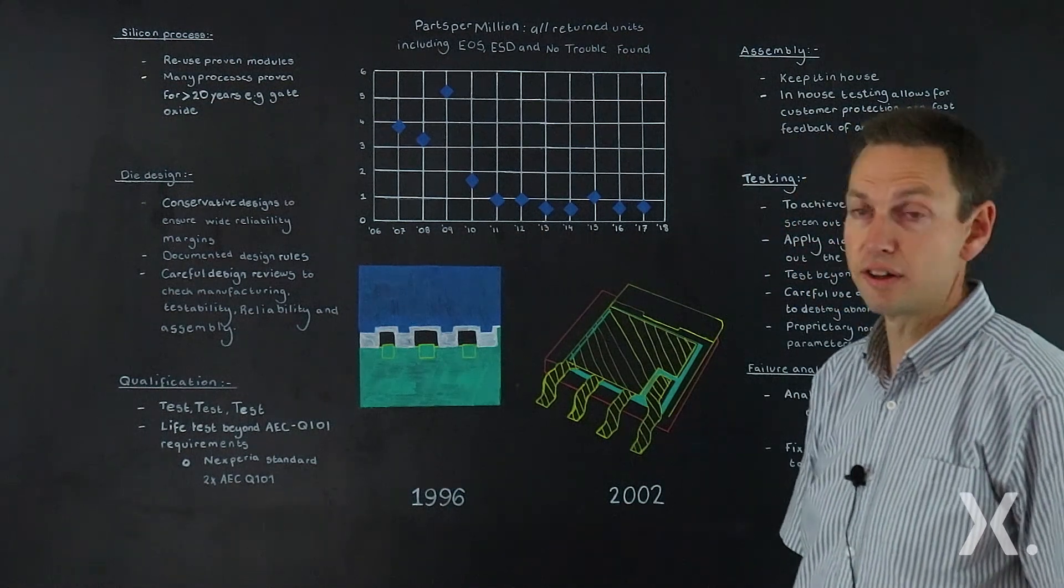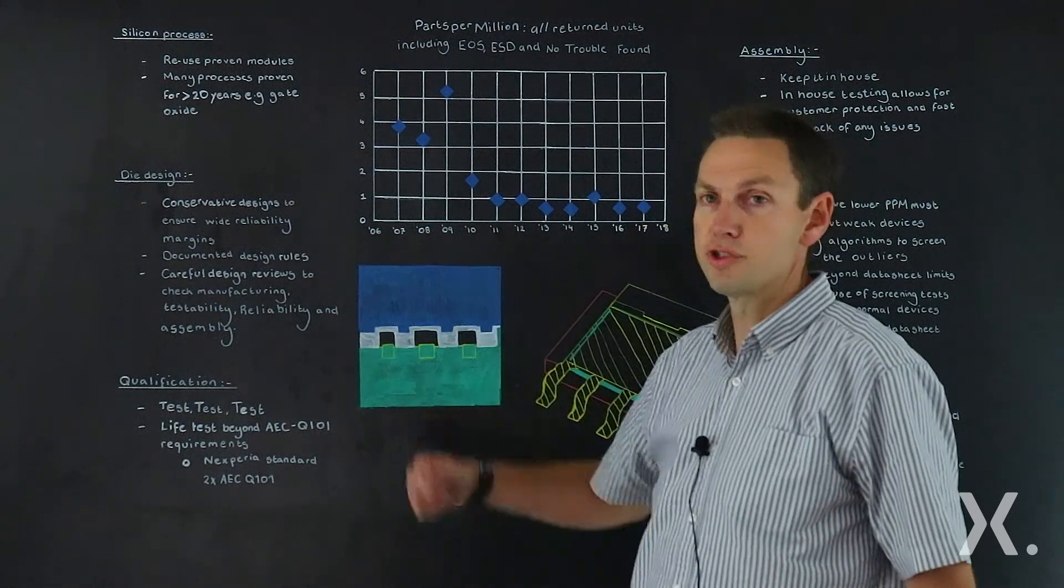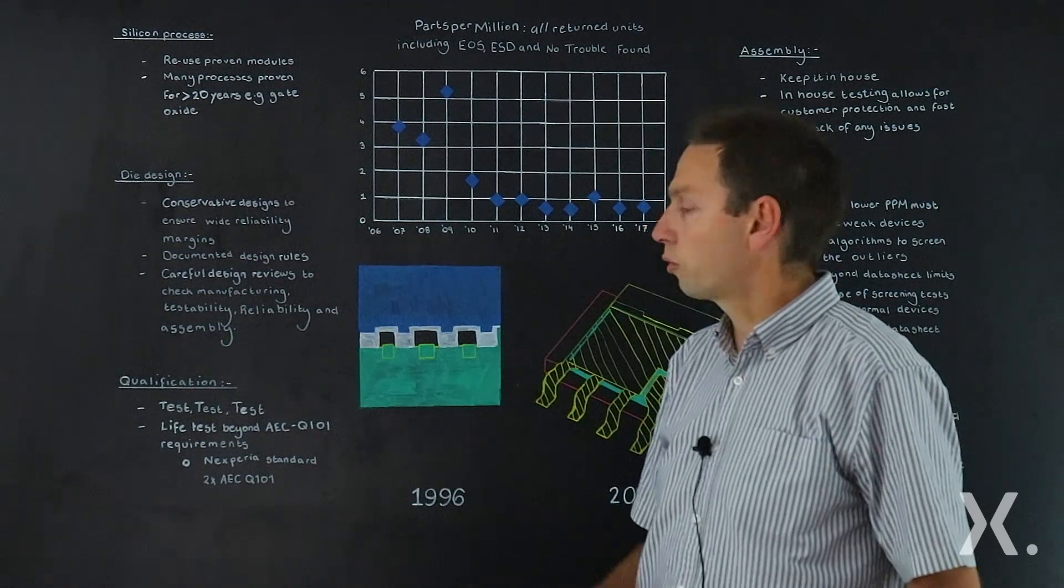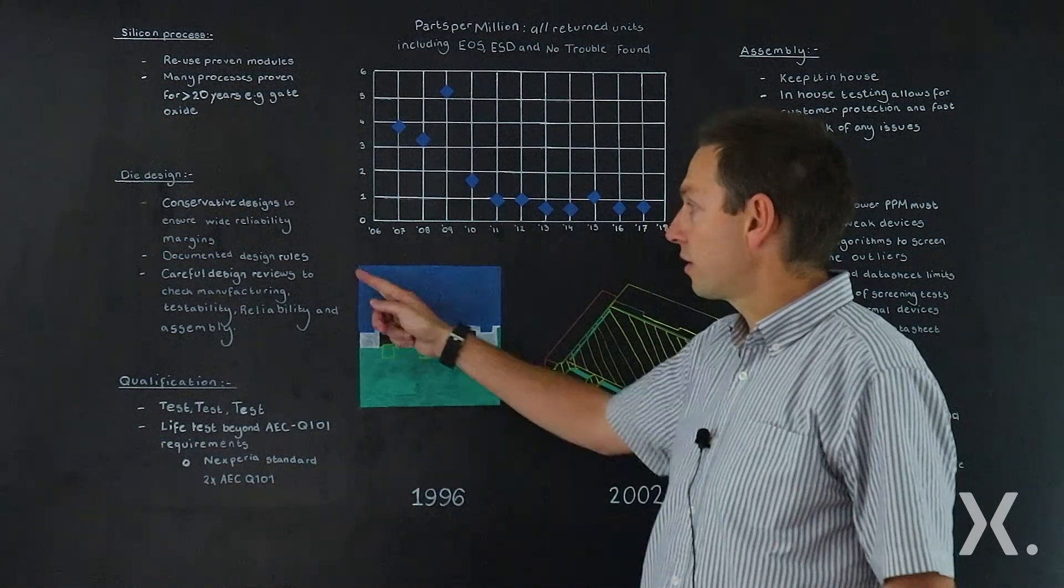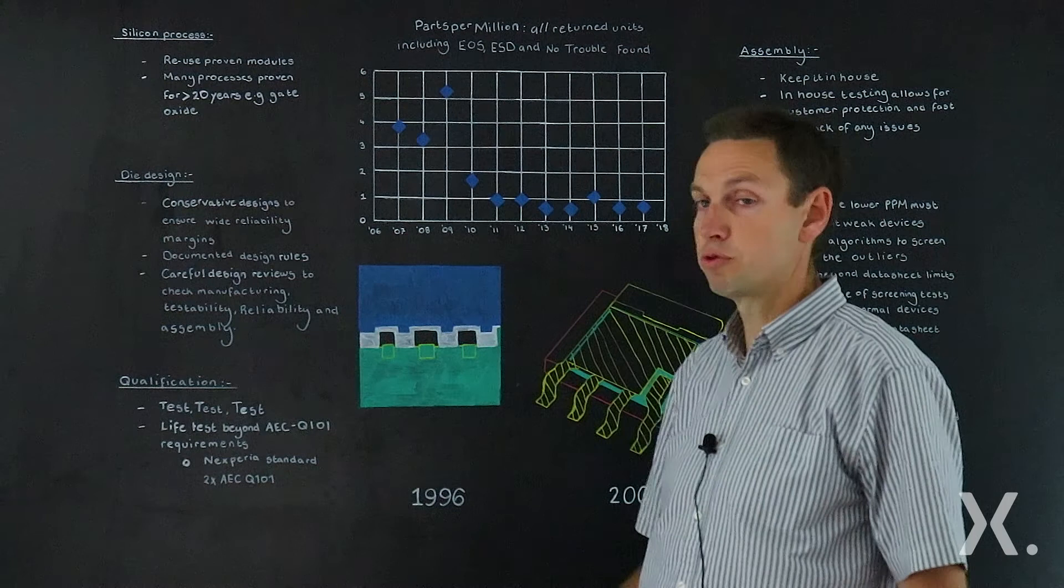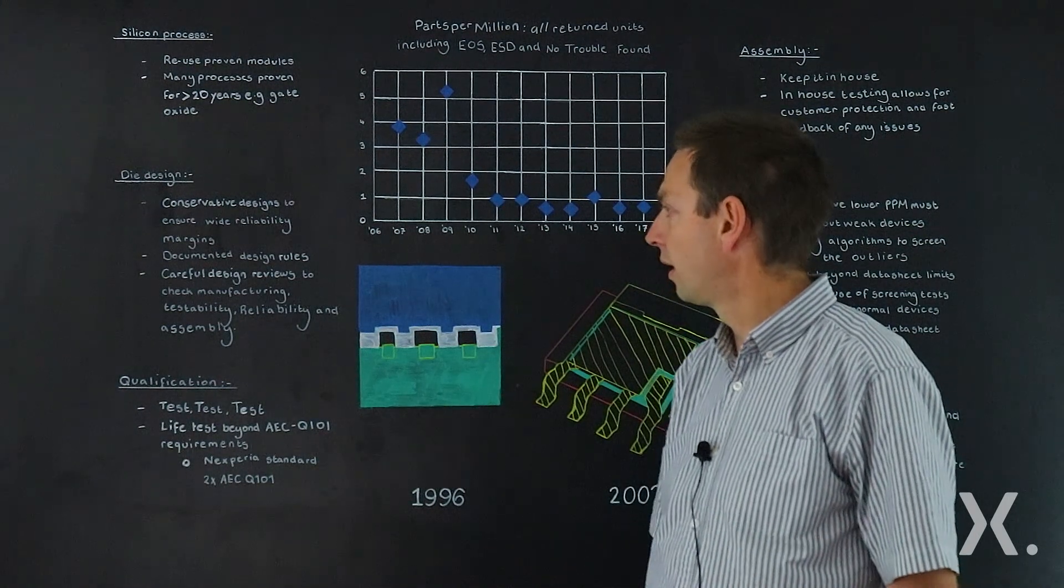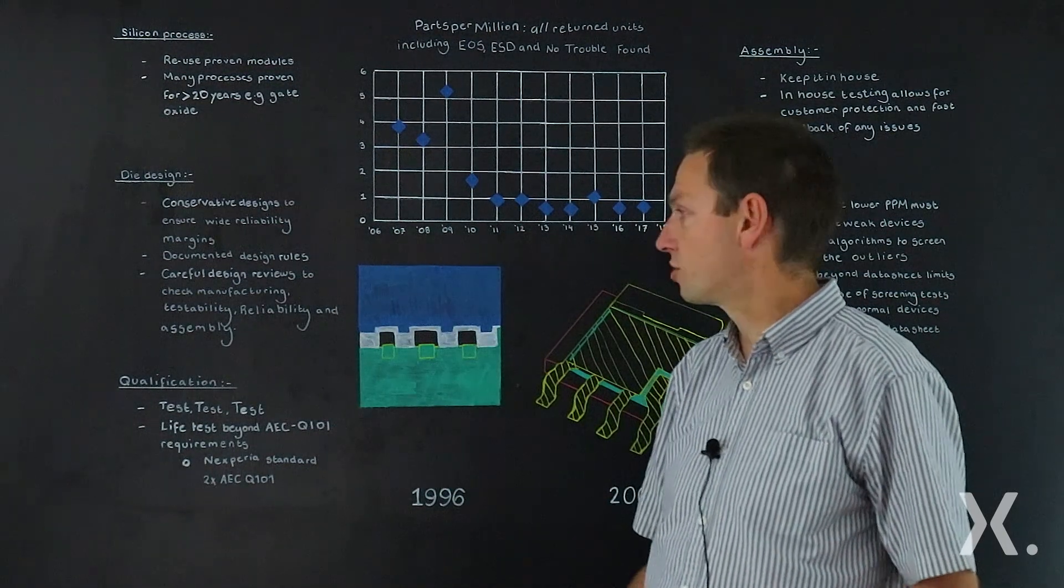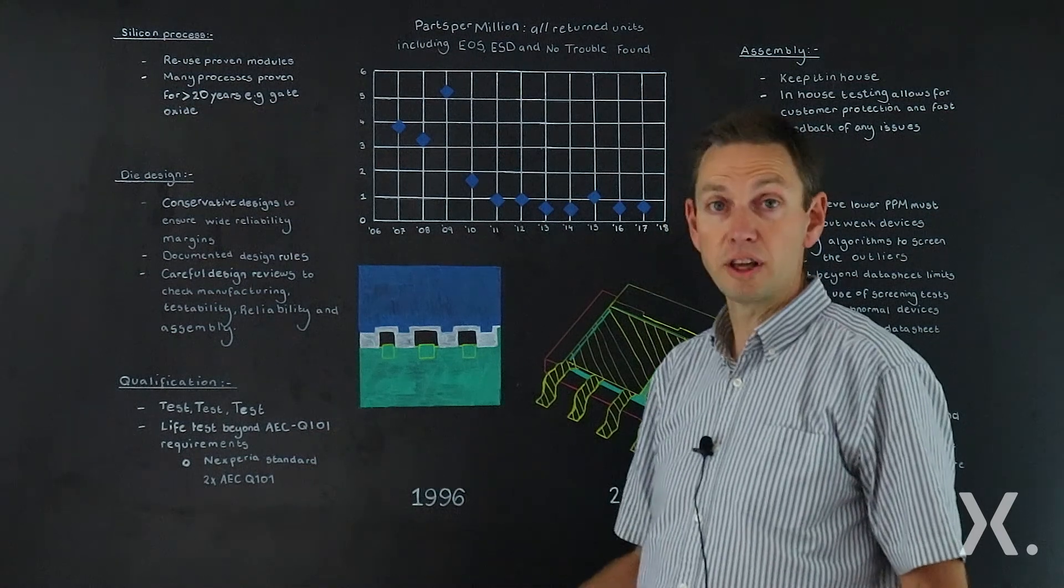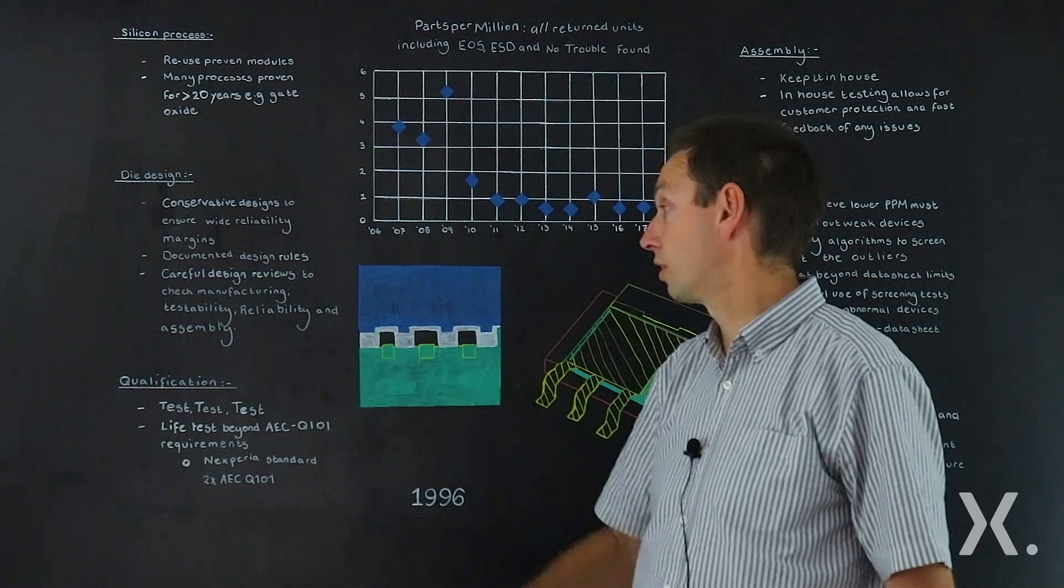So we've got good silicon. What about designing the dies? Again, if you want a reliable product, it's very important to use conservative designs to ensure that we have wide reliability margins. From all the learning we've had, we make sure we've got very well documented design rules so we can check our designs against the design rules to check that nothing strange is happening. And then even before we commit to silicon, we have a very careful review process. So we'll check the designs to check that they're manufacturable, that they can be tested, that they're reliable, and also we can then assemble the silicon really well.